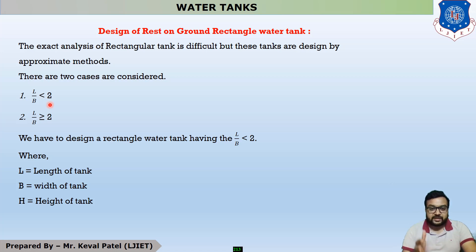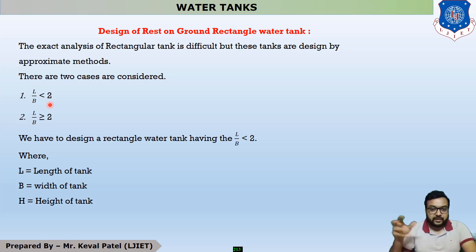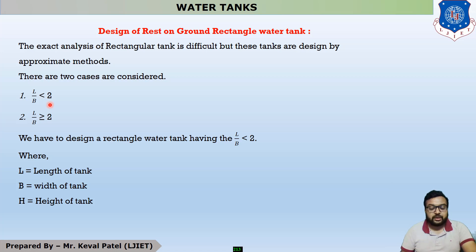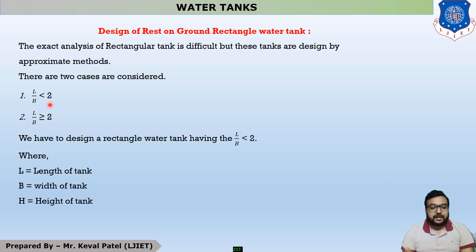If your L/B ratio is less than 2, you design the rest-on-ground water tank using one method. If the L/B ratio is greater than or equal to 2, the method is different. In GTU exams, the frequently asked example is to design a rectangular water tank with L/B ratio less than 2.